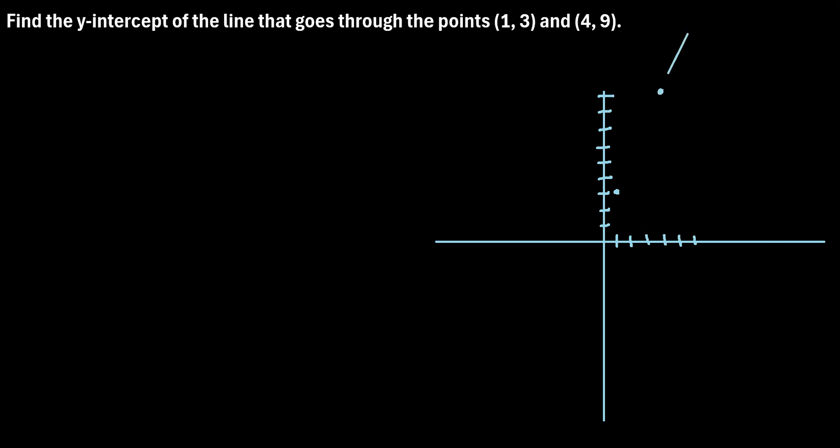So we're told that a line goes through these two points, something like this. And we want to know what is the y-intercept of this line. In other words, where does the line cross the y-axis right here?